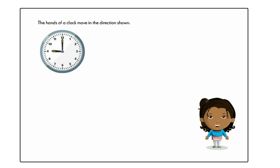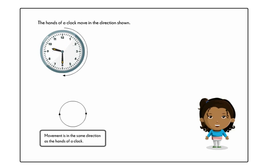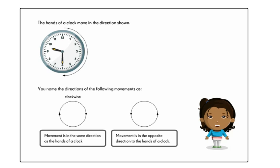Let's look at the direction of the movement of the hands of a clock. If a movement is in the same direction as the hands of a clock, you name the direction of the movement as clockwise. If a movement is in the opposite direction to the hands of a clock, you name the direction of the movement as anticlockwise.